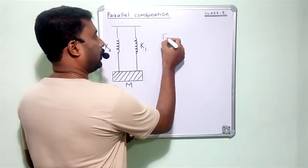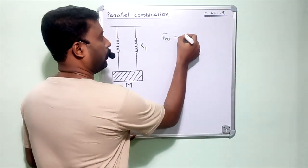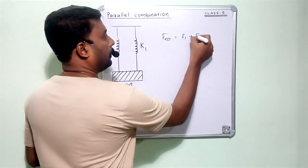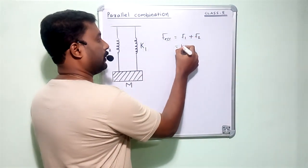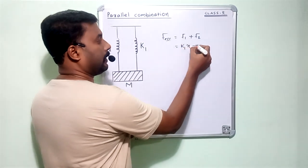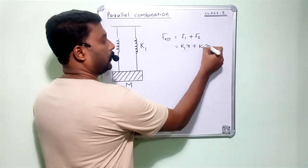The total force acting on the system, force effective, equals F1 plus F2. We have F equals Kx, F1 equals K1x, and F2 equals K2x.